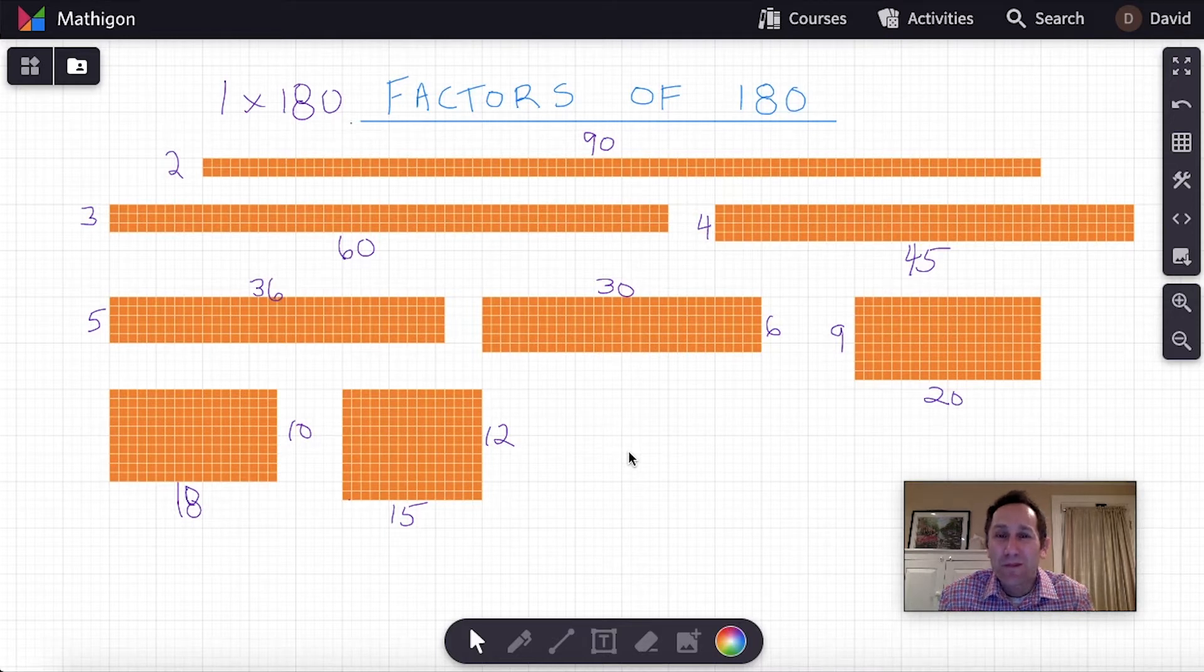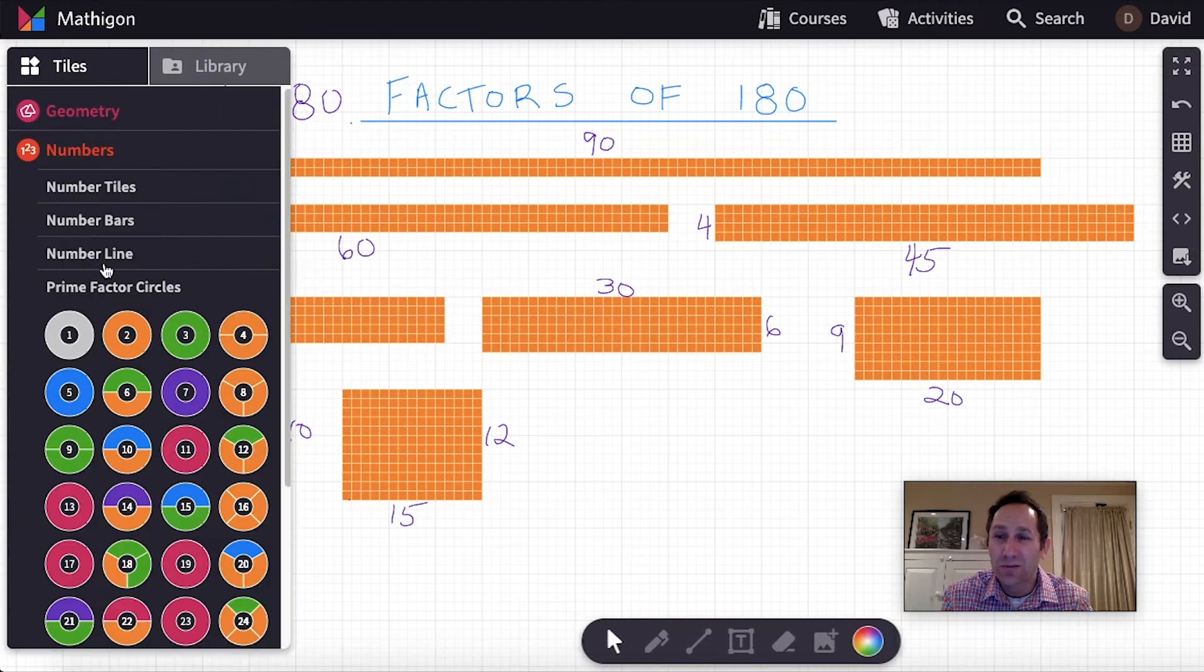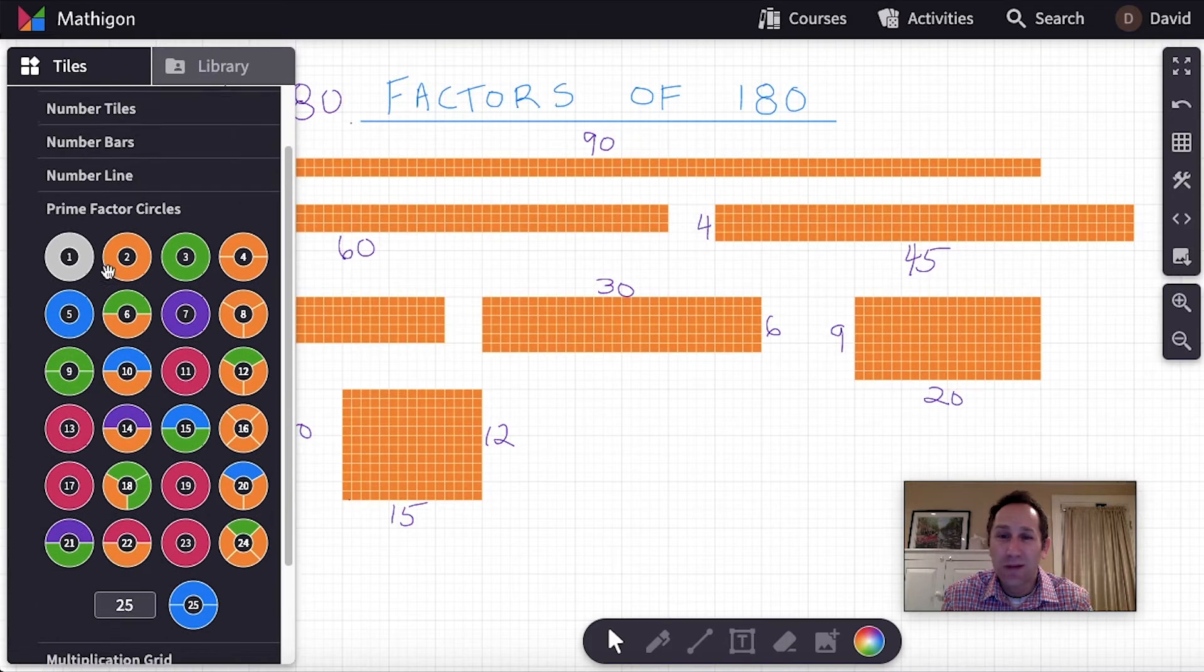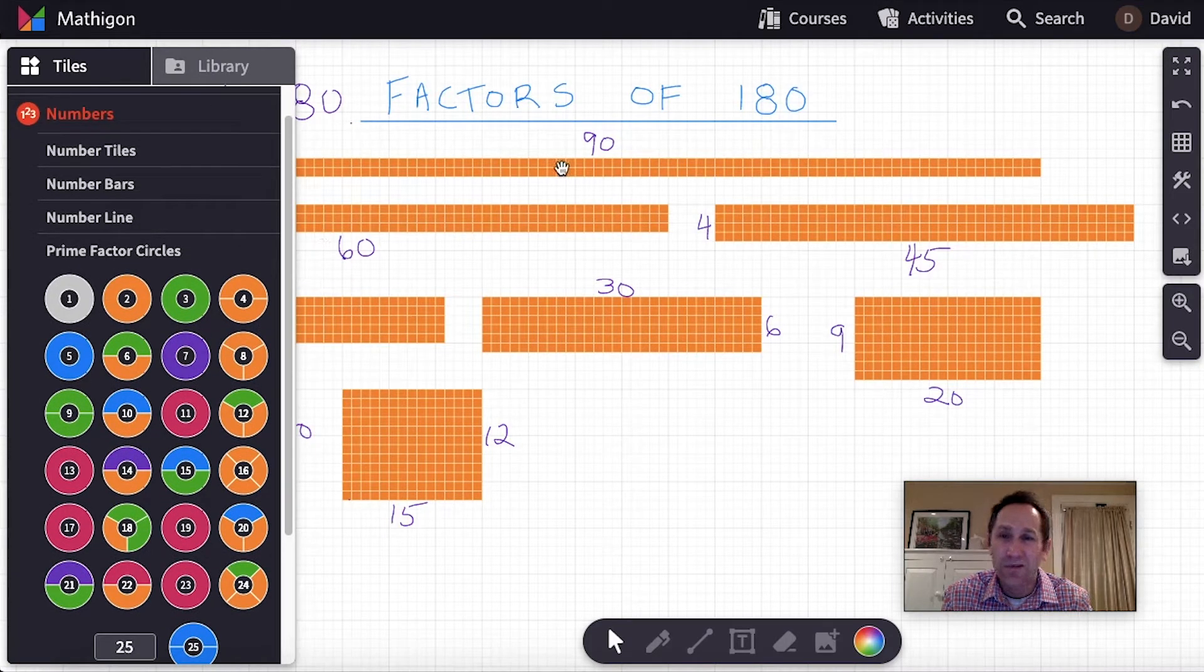In the first video, which you can see the last part of up on the screen here, we created a group of 180 number tiles and created different rectangular arrays of the 180 to find all the factor pairs of 180. In this video we're going to use the prime factor circles in Polypad to also find the factor pairs of 180.